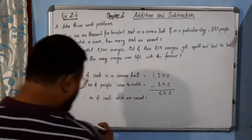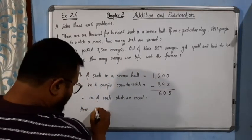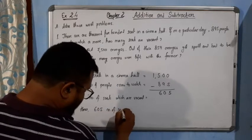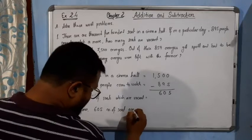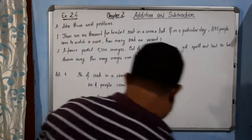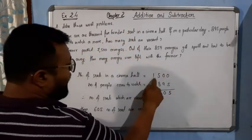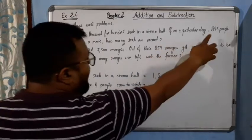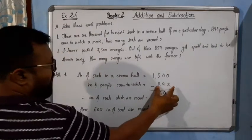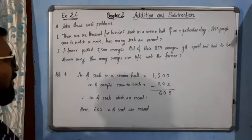Hence, 605 number of seats are vacant. Very simple. I hope you have understood this one. Total number of seats 1500, 895 people came who filled the seats, ultimately 605 seats were vacant. It is very simple.